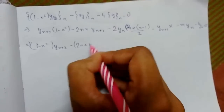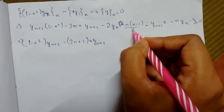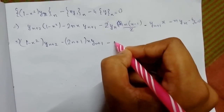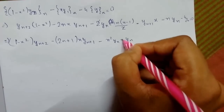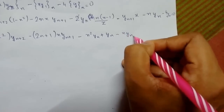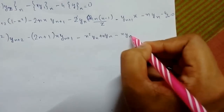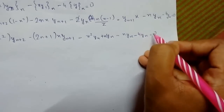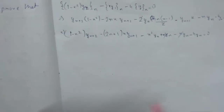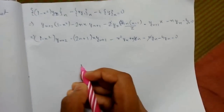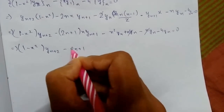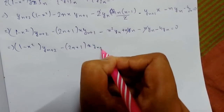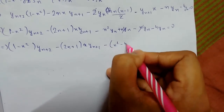Arranging all terms: (1−x²)·y_{n+2} − (2n+1)·x·y_{n+1} − n(n−1)·y_n − n·y_n − 4y_n = 0. Collecting y_n terms: −n²·y_n + n·y_n − n·y_n − 4y_n simplifies. Taking minus common: (1−x²)·y_{n+2} − (2n+1)·x·y_{n+1} − (n²−4)·y_n = 0. This is what we had to prove.